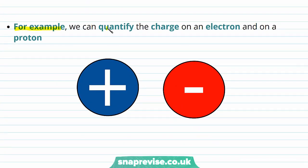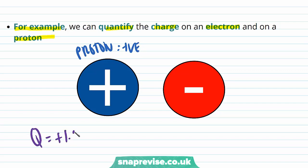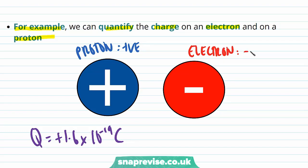For example, we can quantify the charge on an electron and on a proton. We know that a proton is positively charged, and the charge on a proton Q is equal to plus 1.6 times 10 to the minus 19 C. An electron is negatively charged, and the magnitude of its charge is the same as that of the proton, so Q is equal to minus 1.6 times 10 to the minus 19 C.